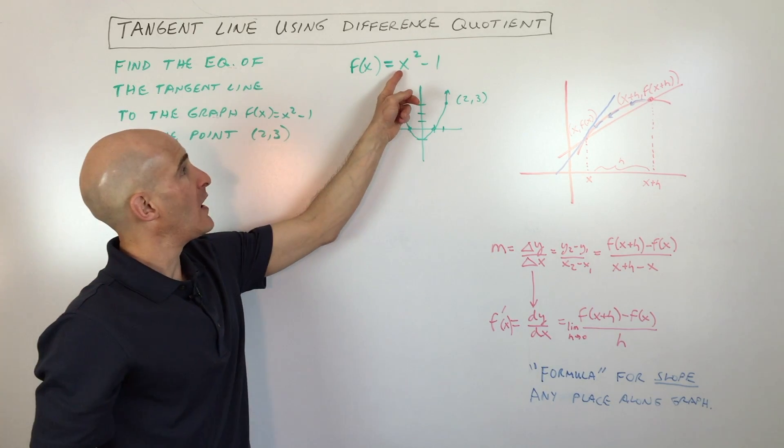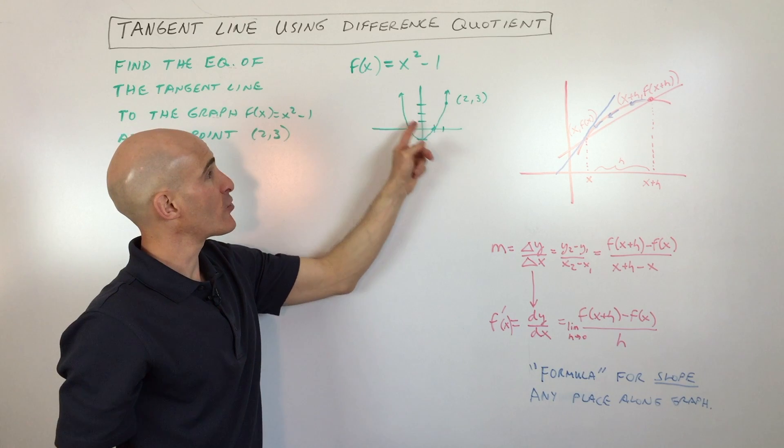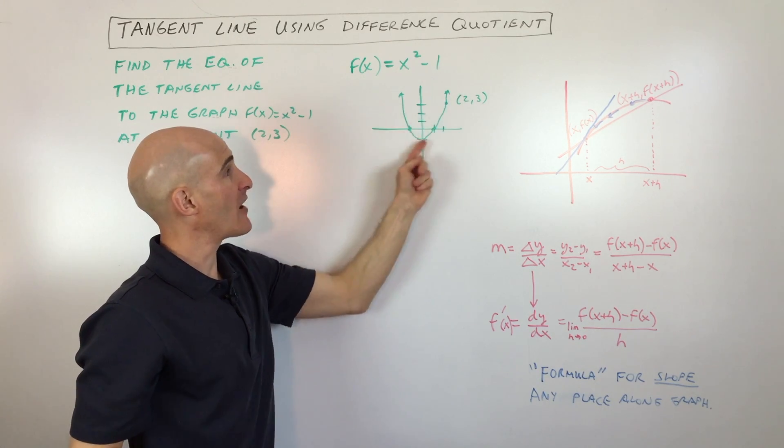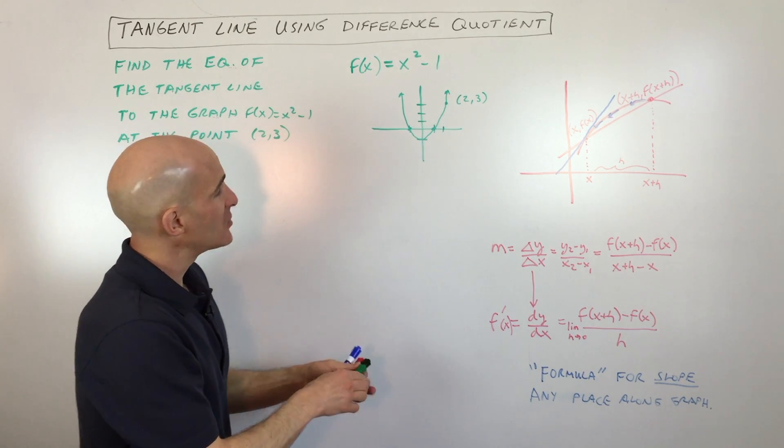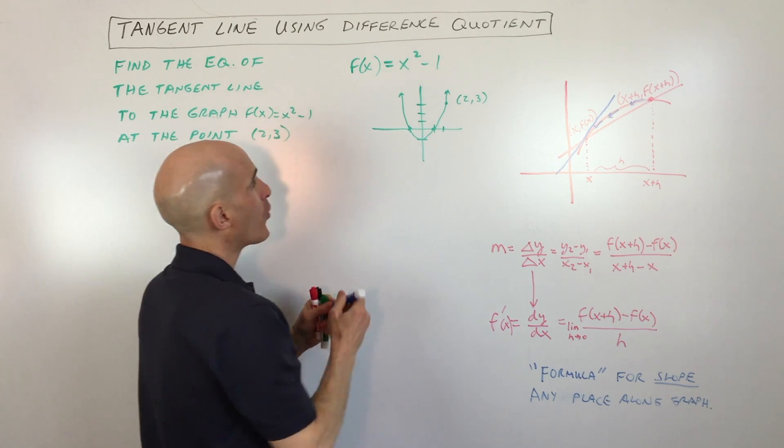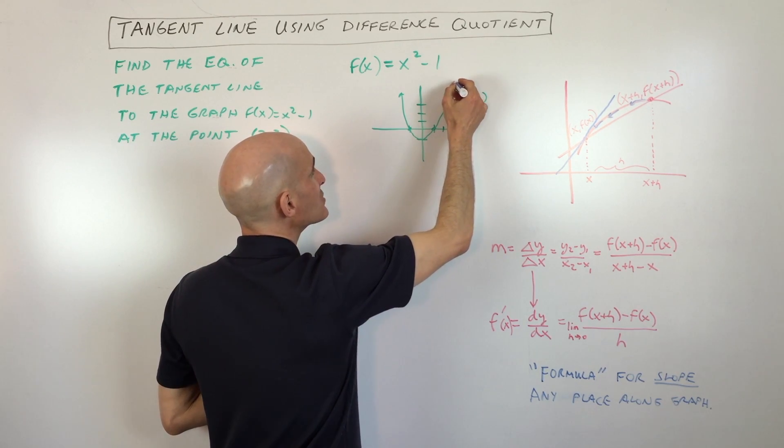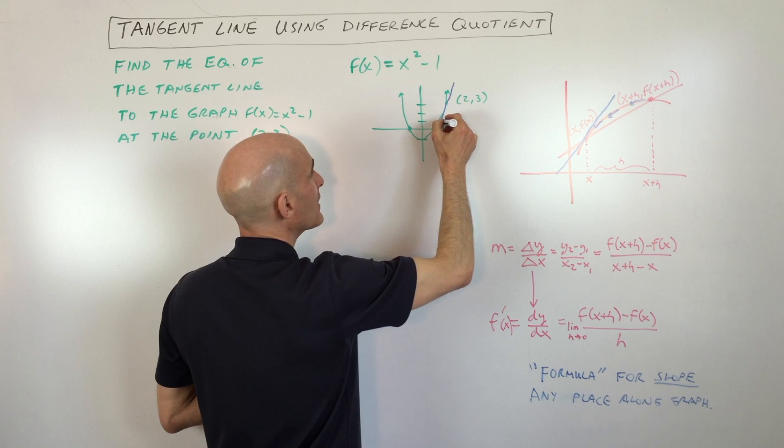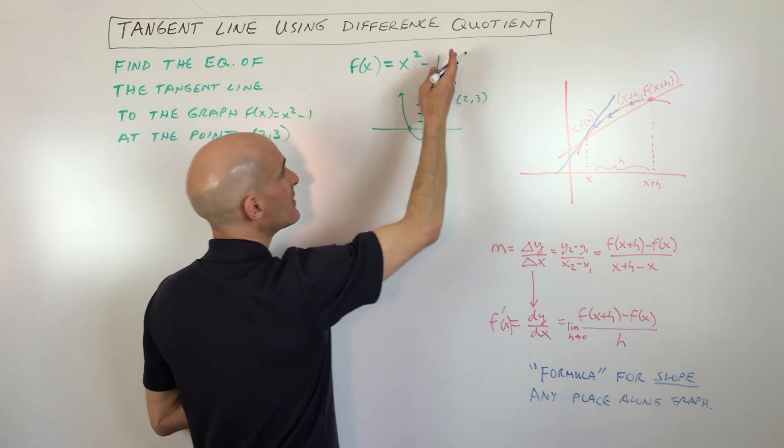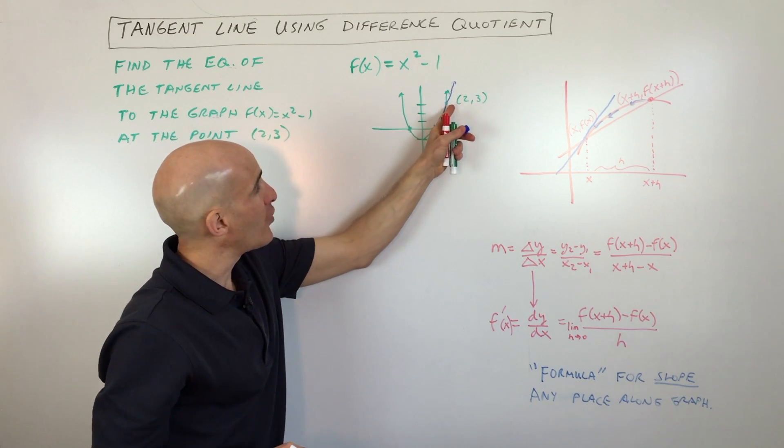So we know y = x² - that's just a parabola. Minus 1 shifts the graph down 1. But what we're going to try to do here is we're going to find the equation of this tangent line right here. It just barely touches the parabola at the point (2, 3).